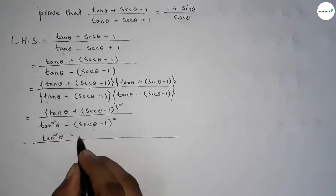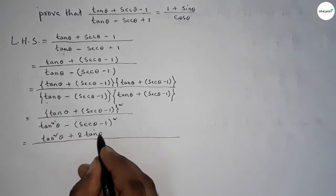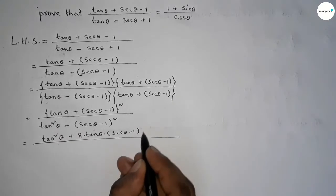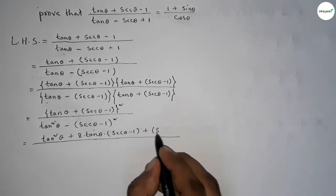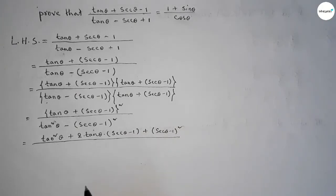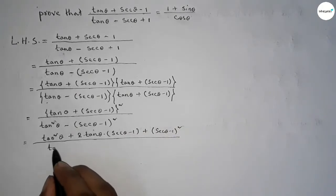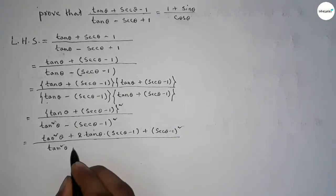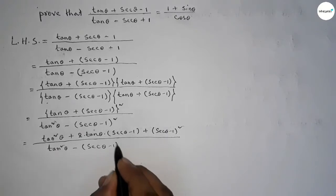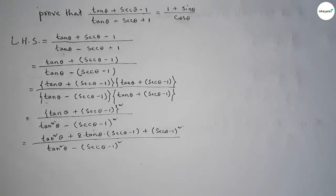So here the numerator expands to: tan²θ + 2·tan θ·(6θ - 1) + (6θ - 1)². And the denominator is tan²θ minus (6θ - 1)².